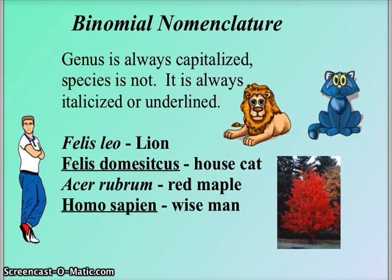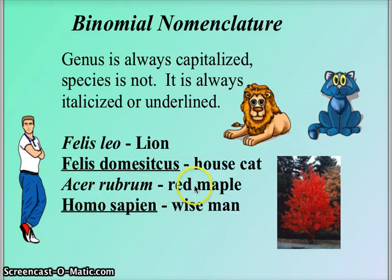In binomial nomenclature, the genus is always capitalized and the species is never capitalized. We always write this name italicized, and if we can't italicize it, we underline it. So the lion is Felis leo in italics. If I can't italicize Felis domesticus — the house cat — I underline it. Acer rubrum, the red maple, is italicized. And Homo sapien, if I cannot italicize it, I underline it.